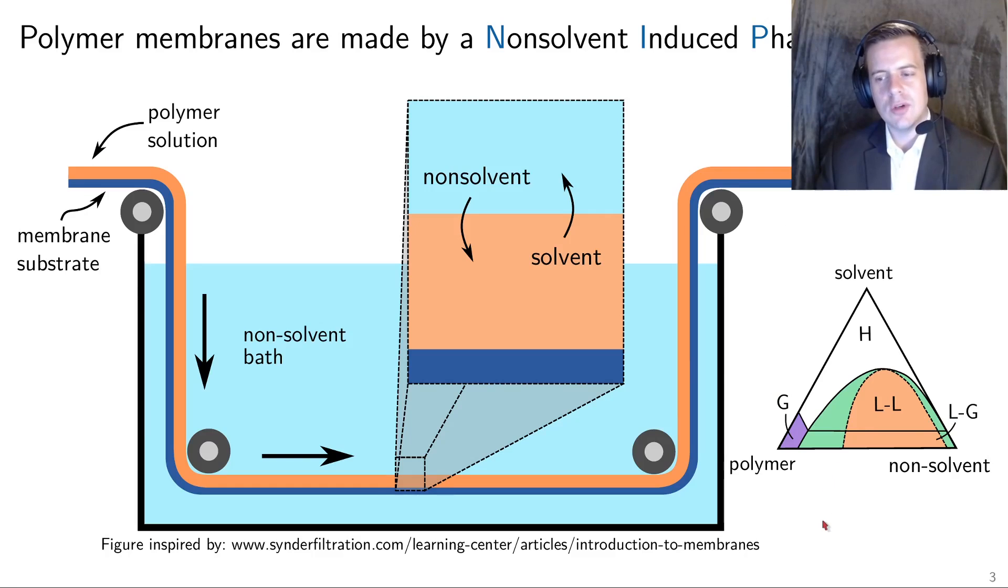So what is NIPs, or non-solvent-induced phase separation? This is a process by which polymer membranes and other industrial materials are made, specifically porous materials. In this case, you have a polymer that's coated on some substrate, and that polymer is dissolved in some good solvent, and it gets dunked in a large non-solvent bath. Then there's an exchange of solvent and non-solvent across an interface, and that exchange leads to the development of microstructure.